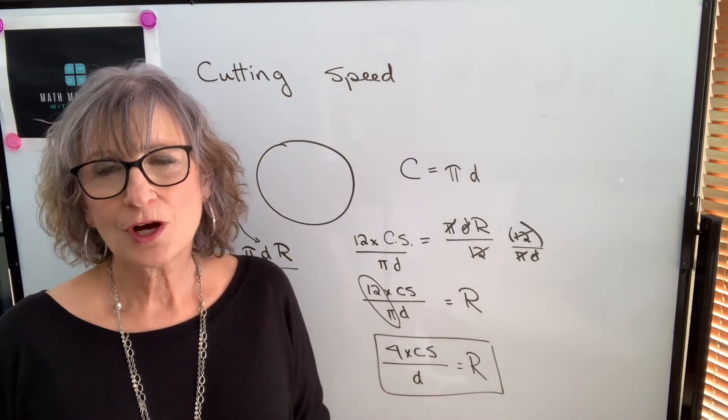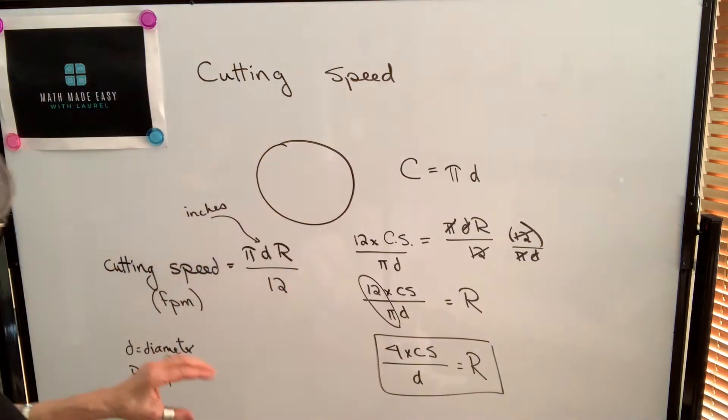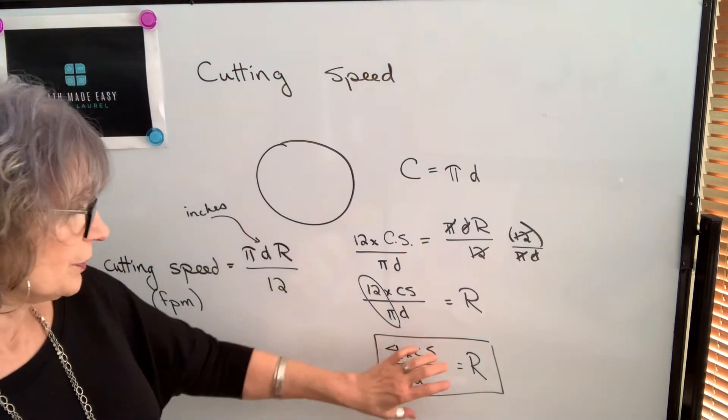So you have two options if you're asked to find the RPM when you know the cutting speed. You can either use the formula and isolate for r, or you can use this shortcut.